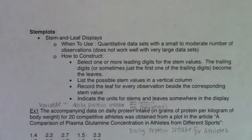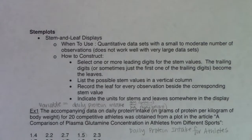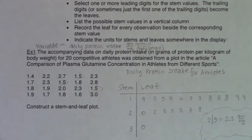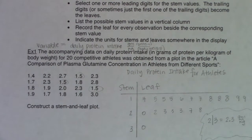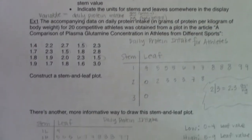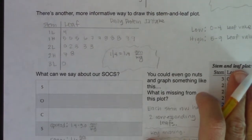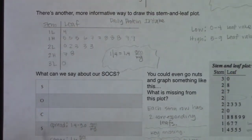All right, you kept hearing me say repeatedly in this chapter that we will come back to previous examples and fill in any SOCS that we left blank, because at the time we first did these examples we didn't know the SOCS. If we go back to example one, our very first example from this chapter, we had daily protein intake with athletes, and at the time all we knew was the last S — spread. We didn't know anything about shape, outliers, or center, and we have all of that now.